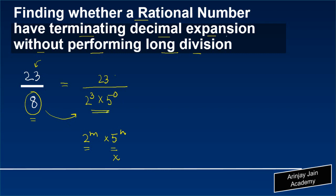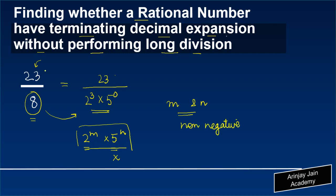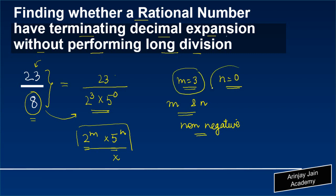When we write a rational number in the form 2 to the power m into 5 to the power n, if it is possible to write it in such a manner where m and n are non-negative integers, then this number will have a terminating decimal expansion. In our case, m is equal to 3 and n is equal to 0, both of which are non-negative integers.